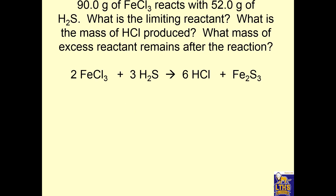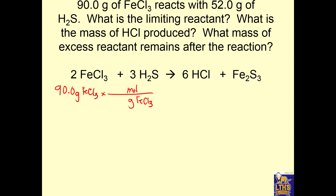New problem: 90 grams of FeCl3 and 52 grams of H2S. Reactant and reactant — so before I even go on, I know this is a limiting reactant problem because I have a mass of two reactants. The question asks: what is the limiting reactant, what mass of HCl is produced, and what mass of excess reactant remains?